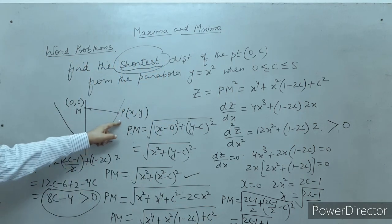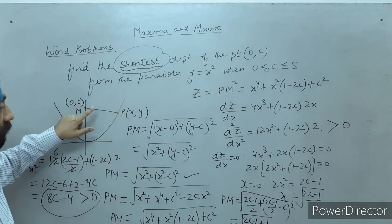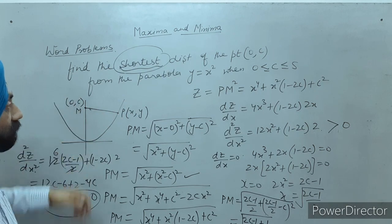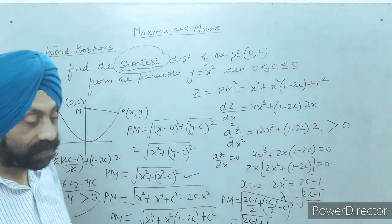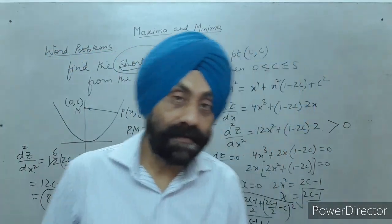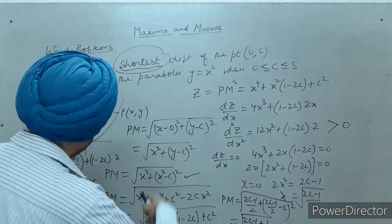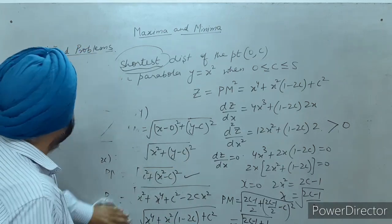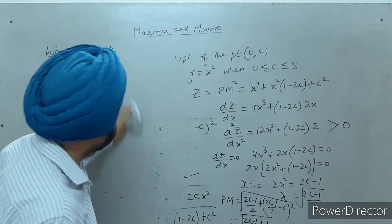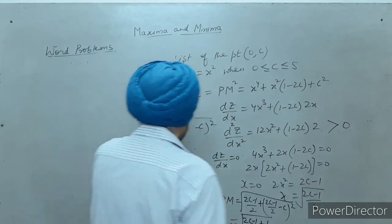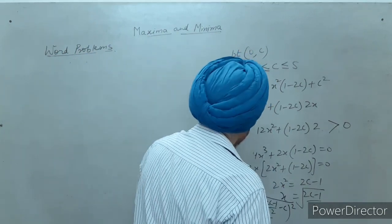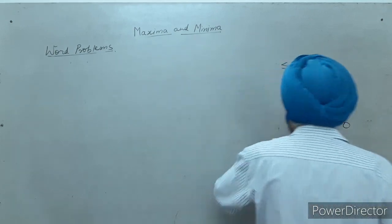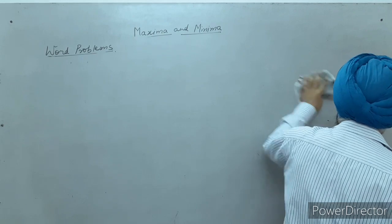So the minimum distance PM is found, where P is a point on the parabola and M is the point (0, c) on the y-axis. This is the way to solve this question. I hope you have understood it. The next question is again a very good sum, and in that sum also it is our imagination and making up of the figure which helps us understand the question.